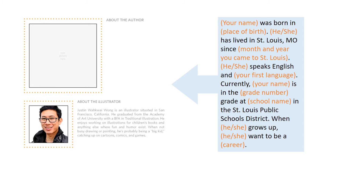This page is all about you, the author. Readers will want to know more about the author of this fun book. You can use the sentences on the right and fill in the orange blanks. Remember to bring your book to the ESOL office on February 12th so we can take your photo for this page and publish your book. For example, Eli Hamward was born in Iraq. He has lived in St. Louis, Missouri since November 2016. He speaks English and Arabic. Currently, Eli is in the second grade at Naheh Chapman New American Academy in St. Louis Public Schools District. When he grows up, he wants to be an engineer.